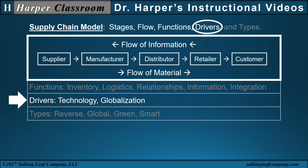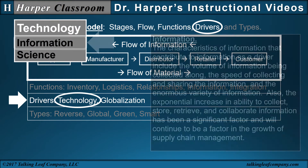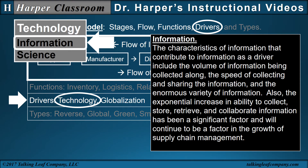There are many drivers. Two key drivers are technology and globalization. Technology. The characteristics of information that contribute to information as a driver include the volume of information being collected, along with the speed of collecting and sharing the information, and the enormous variety of information. Also, the exponential increase in ability to collect, store, retrieve, and collaborate information has been a significant factor and will continue to be a factor in the growth of supply chain management.